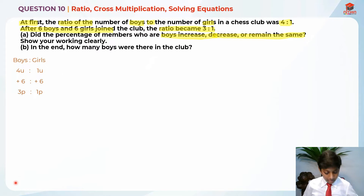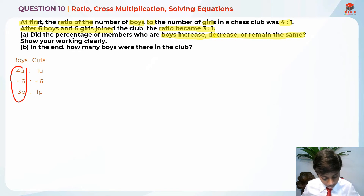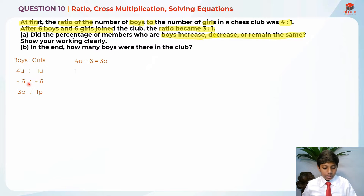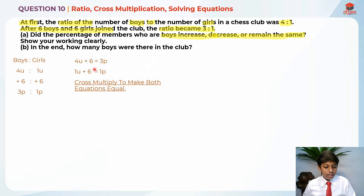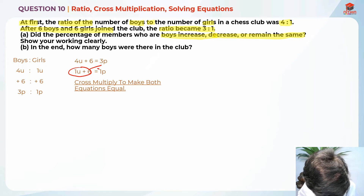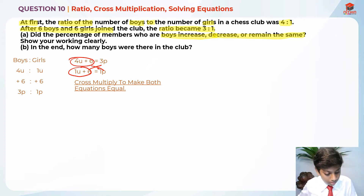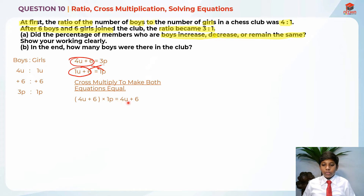Basically, this column here forms one equation. So 4 units plus 6 is equal to 3 parts, and 1 unit plus 6 is 1 part. I need to make these equal so I'll use cross multiplication on both sides. That means 4 units plus 6 times 1 part, and 1 unit plus 6 times 3 parts. So I'll get 4 units plus 6 times 1 part is equal to 4 units plus 6.